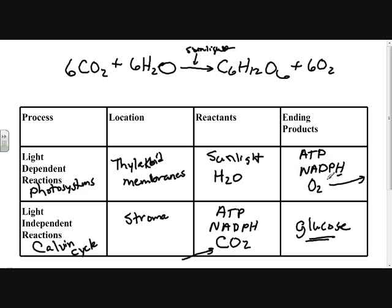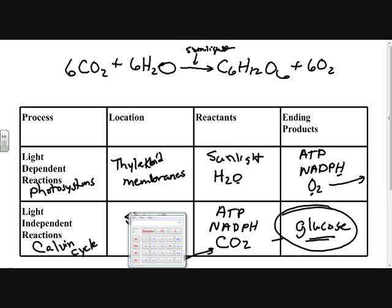The light independent reactions, the Calvin cycle, happen in the stroma, the liquid interior part of the chloroplasts. They use ATP and NADPH and CO2 from the atmosphere to produce our final end product, which is glucose.